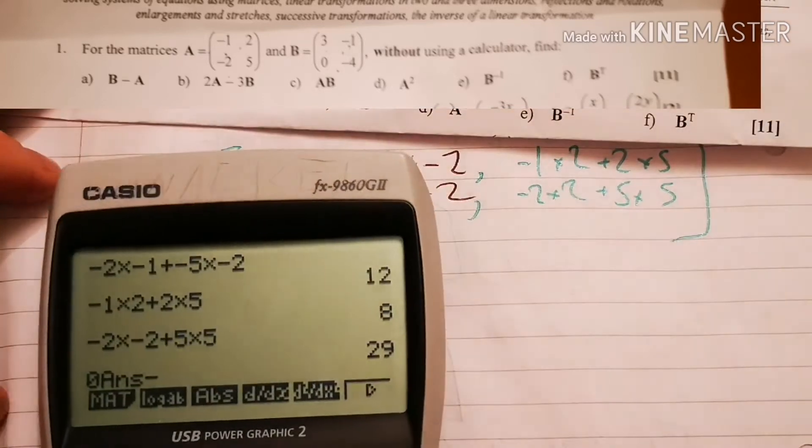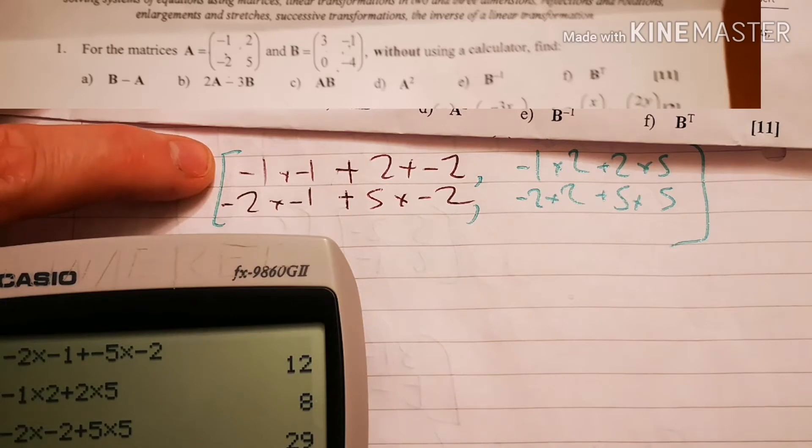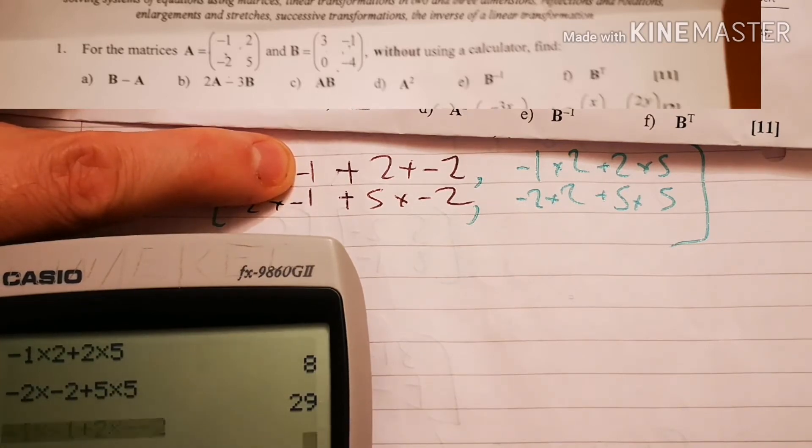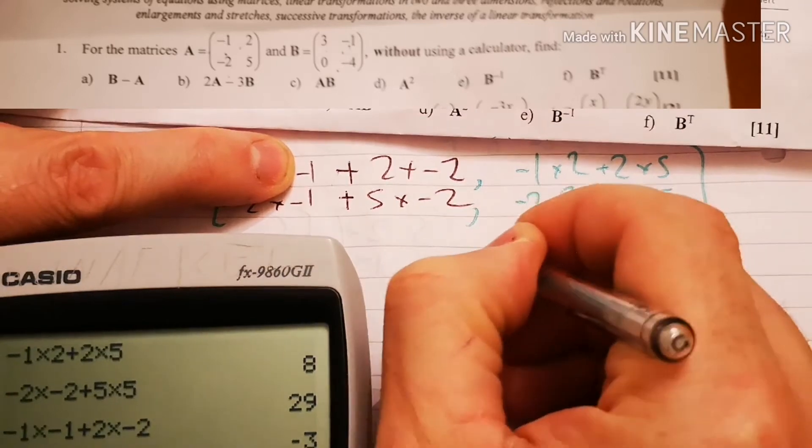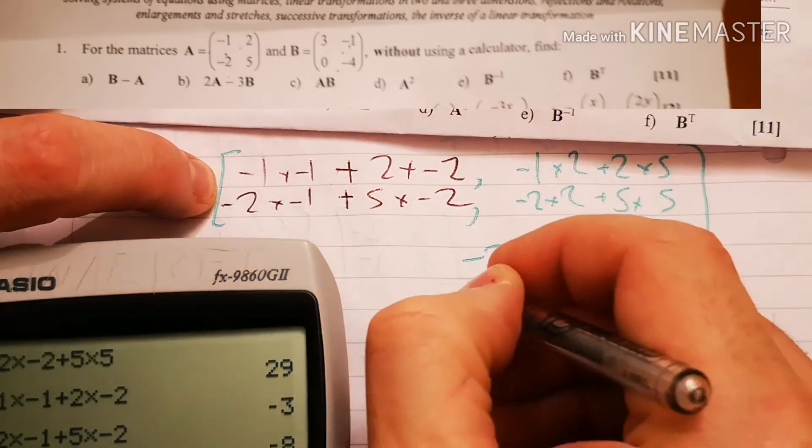I'm just going to trust my calculator to do this. So here I've got minus 1 times, put this out. Minus 1 times minus 1. Plus 2 times minus 2. Type it in properly. That's better. Which is minus 3. That will now do minus 2 times minus 1. Plus 5 times minus 2. Which is minus 8.